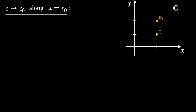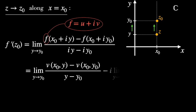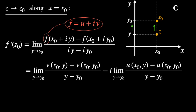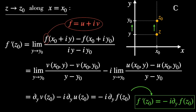Now we can do the same approximation but along the y axis, the vertical axis, with x equals x zero. Doing the same vertically along the line x equals x zero, as we see in the graph, we can calculate the derivative in a very similar way using this limit, but this time y tends to y zero. We write f as u plus iv and break the limit into real and imaginary parts. Notice the signs are different here in comparison to the previous one. In the end we get the partial derivatives of v and u, and we conclude that the derivative of f at point z zero is the same as minus i times the partial derivative of f with respect to y at point z zero.